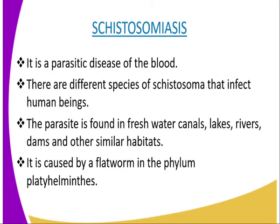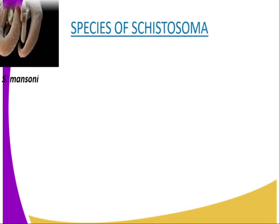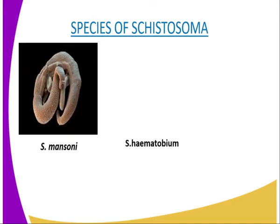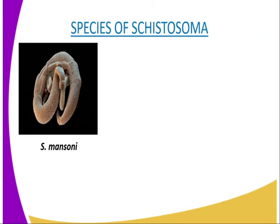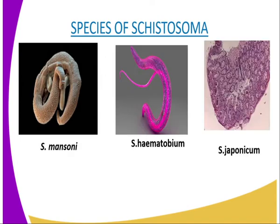We are now going to look at another parasitic worm — schistosomiasis, or we can call it bilharzia. This is a parasitic disease of the blood. It is caused by a flatworm of the phylum Platyhelminthes, of the genus Schistosoma, as shown in the diagrammatic representation on screen, showing the different species of Schistosoma. The species that infect human beings include Schistosoma mansoni, Schistosoma haematobium, and Schistosoma japonicum. These parasites are found in freshwater canals, lakes, rivers, dams, and also rice-growing areas.